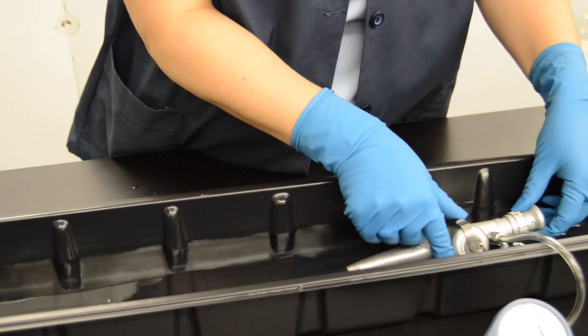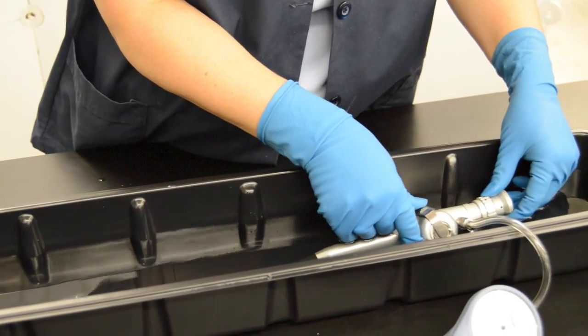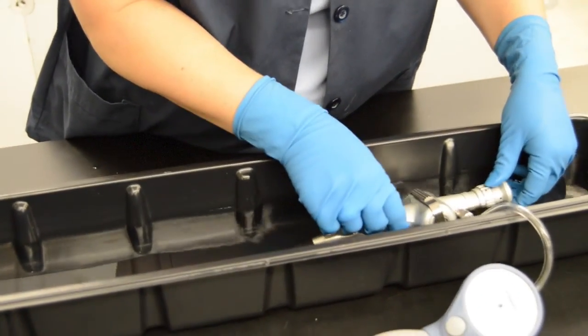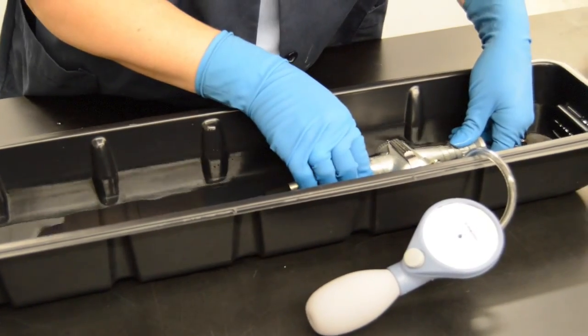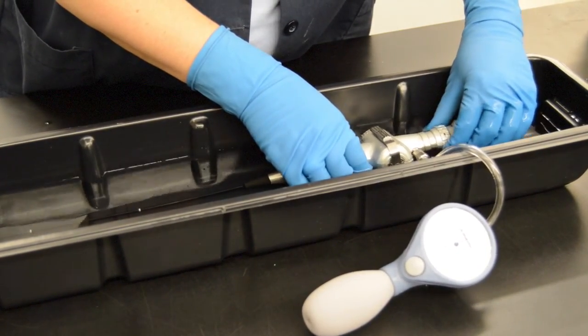A steady stream of air bubbles indicates a leak in the endoscope. Remove the scope immediately from the water while the scope is still pressurized. Air escaping the endoscope at the leak site will have prevented fluid invasion.